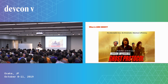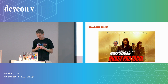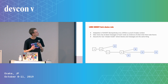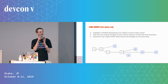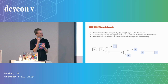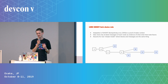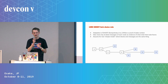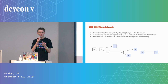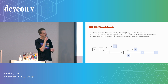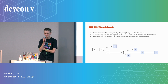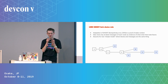I'm going to be talking about the LMD Ghost fork choice rule. So what is LMD Ghost? It's an adaptation of Ghost — a.k.a. Greedy Heaviest Observed Subtree — which is an alternative proof-of-work fork choice rule that academics Yonatan Sompolinsky and Aviv Zohar developed in 2014. It basically takes the same principles as original Ghost and tries to modify them slightly and fit them into a proof-of-stake context.